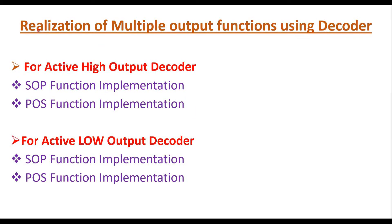In this video I will discuss realization of multiple output functions using a decoder. I will discuss how to implement SOP functions and POS functions when we consider a decoder with active high outputs. Similarly, I will also explain how to implement SOP and POS functions when we consider a decoder with active low outputs. First I will start with active high output decoders and how to implement SOP functions.